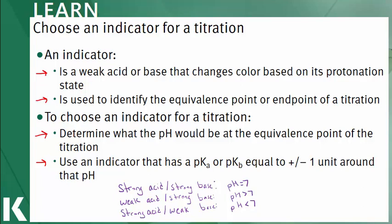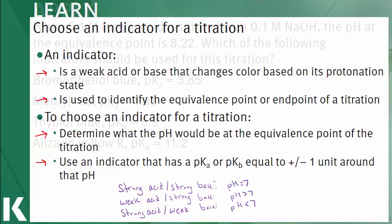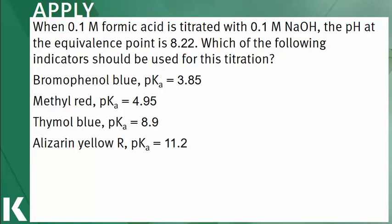Let's apply this information to test if you can choose which indicator would be the best in a titration. Here we're told that formic acid, a weak acid, is titrated with sodium hydroxide, a strong base.